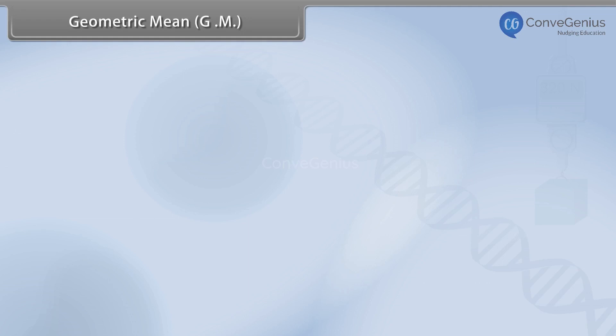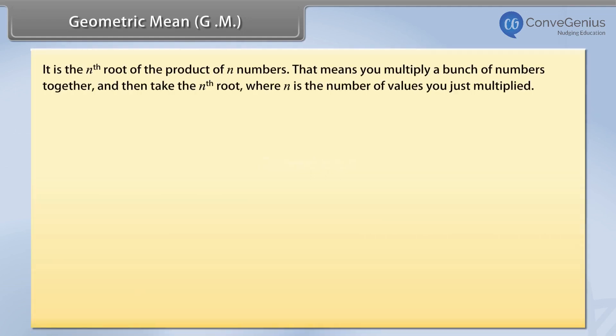Geometric mean (GM). It is the nth root of the product of n numbers. That means you multiply a bunch of numbers together and then take the nth root, where n is the number of values you just multiplied.